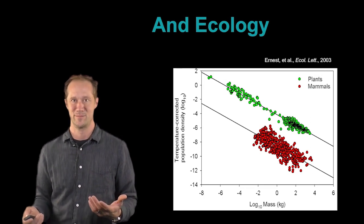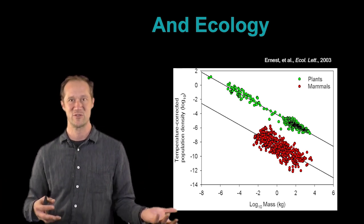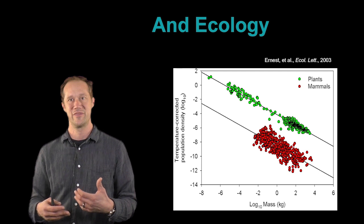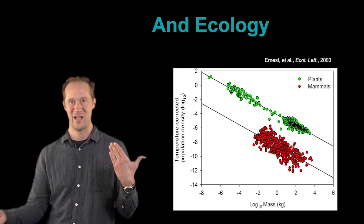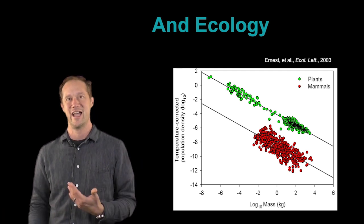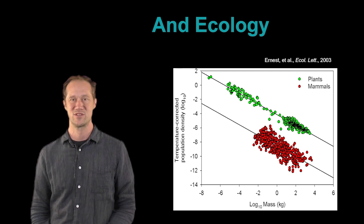And finally, as another ecological example, this affects how many individuals we see, or density, how many individuals per area that we see, where the bigger you are or the warmer you are, the more energy you need, the fewer individuals you get around in a very systematic way. And you see the systematic pattern for animals, which are the red dots, and plants, which are the green dots.